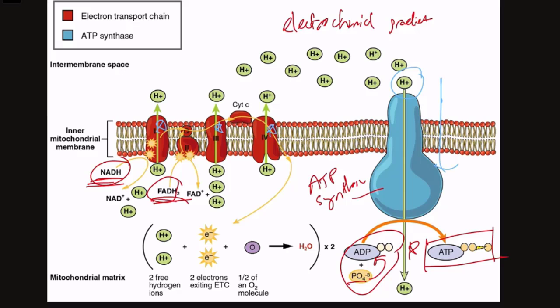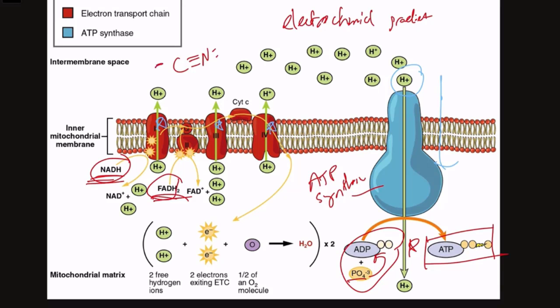So where does cyanide jump into this picture? Cyanide has this structure: carbon triple bonded to nitrogen. Nitrogen has its two electrons there, so it's fine, but this carbon is going to carry a negative formal charge on it. What the cyanide does is it's basically going to latch onto complex 4 of your electron transport chain.